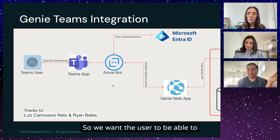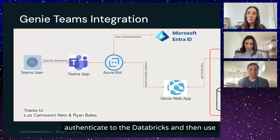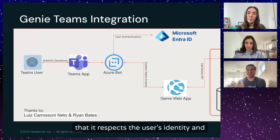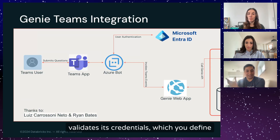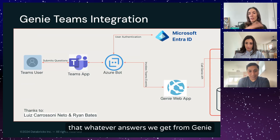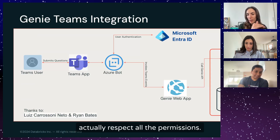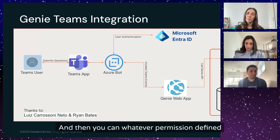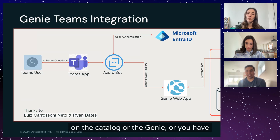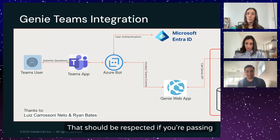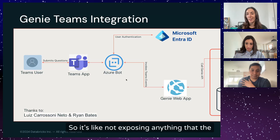Next is authentication. We want the user to be able to authenticate to Databricks and then use their identity to make requests to Genie, so that it respects the user's identity and validates their credentials — which you define — and the access permissions defined in Unity Catalog. This means that whatever answers we get from Genie actually respect those permissions, including PII information with row-level security.